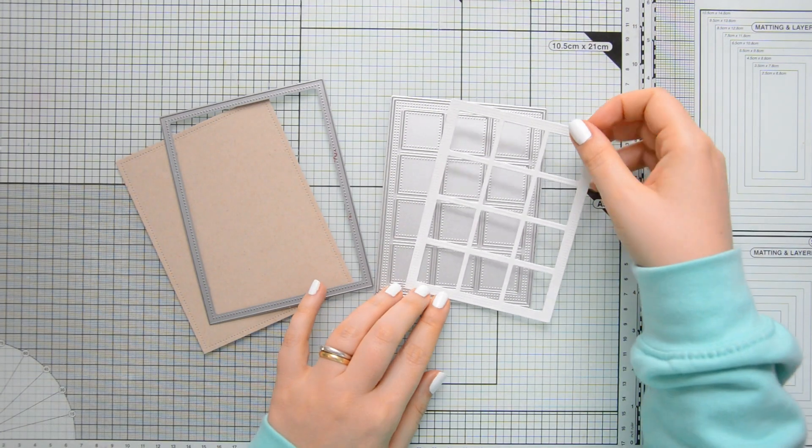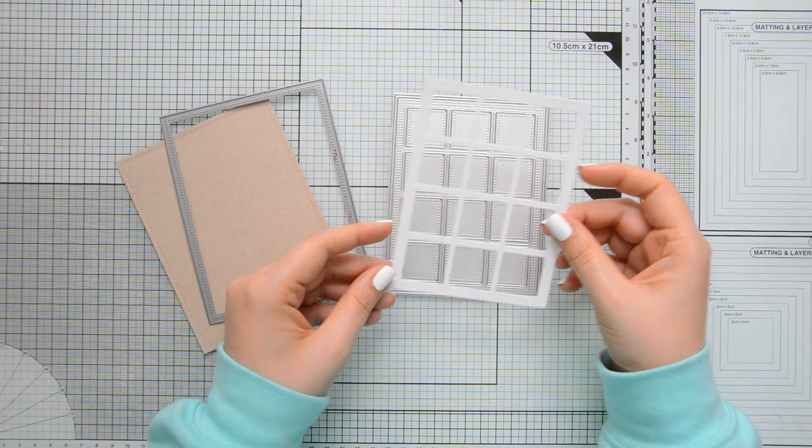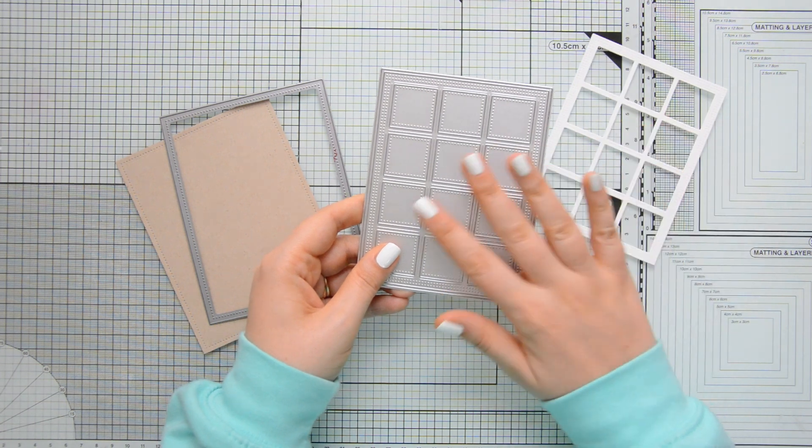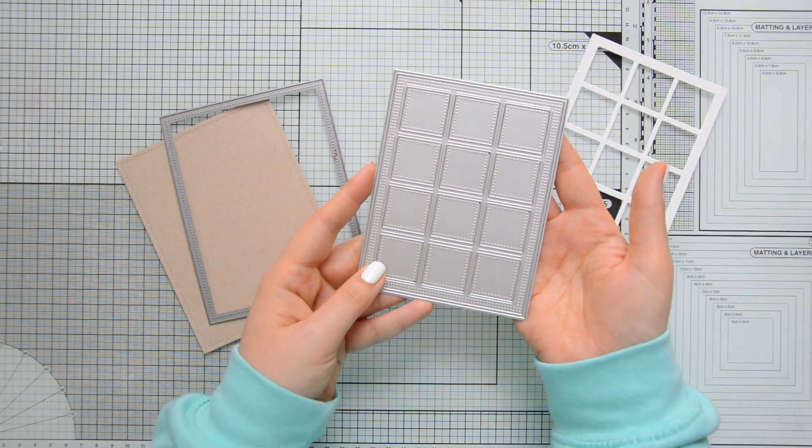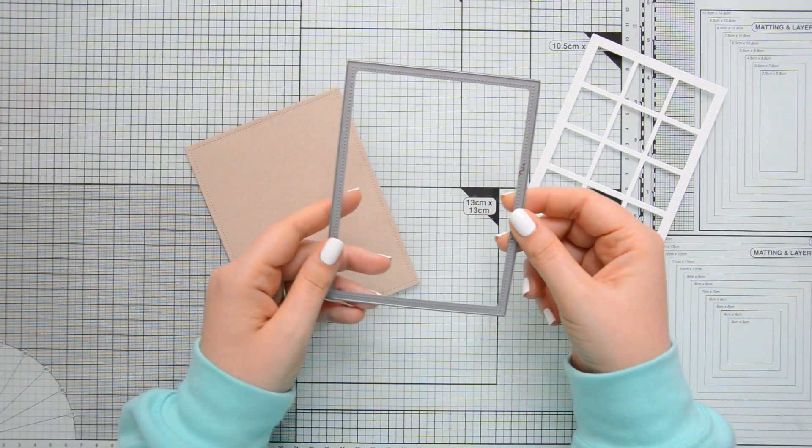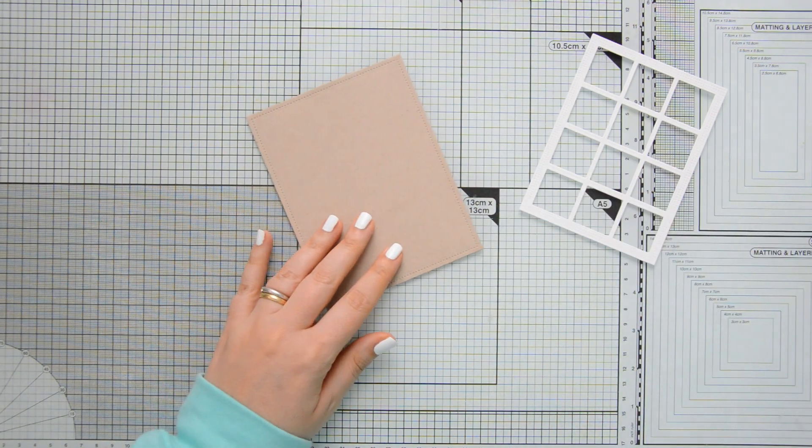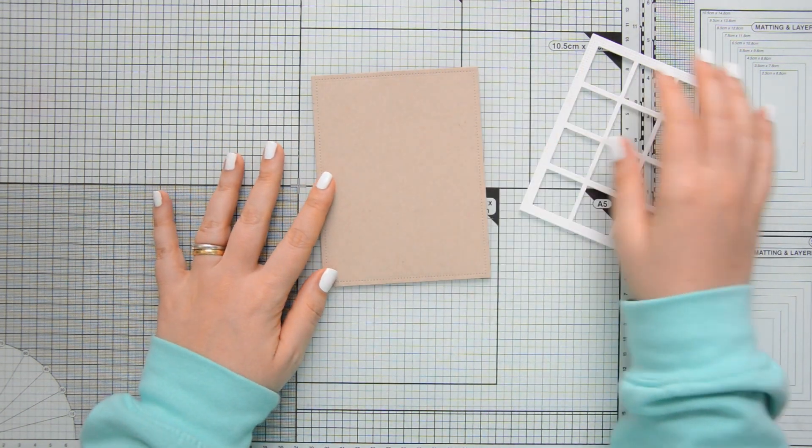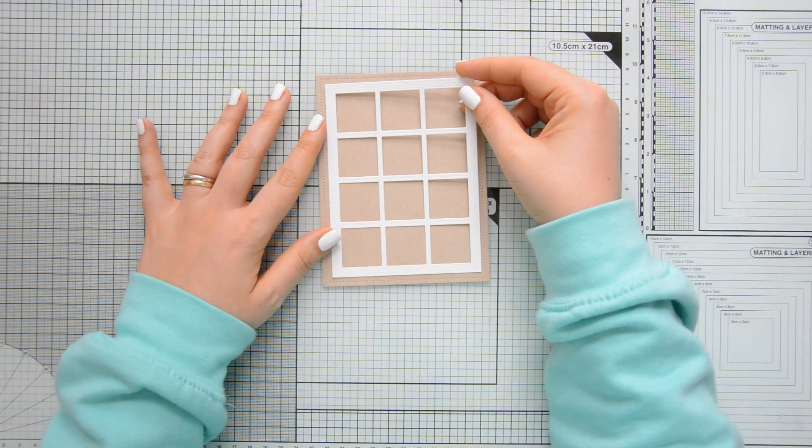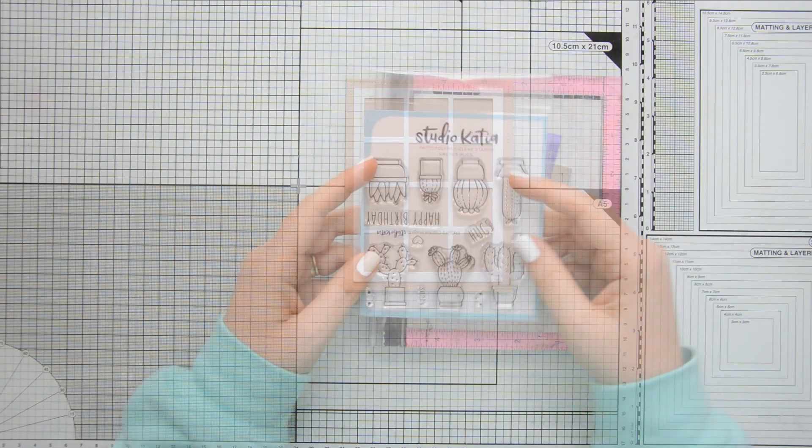I started by doing some die cutting to create the elements that I'll be using on my card base. I die cut some Bristol Smooth cardstock by Strathmore using the dotted square frame die by Studio Katia, and then I also used the rectangle die in the Darling Ribbon and Dotted Frames dies to die cut some Nina Desert Storm cardstock to the standard A2 size, so 4 1/4 by 5 1/2 inches. I'll be layering these two panels on my card base.